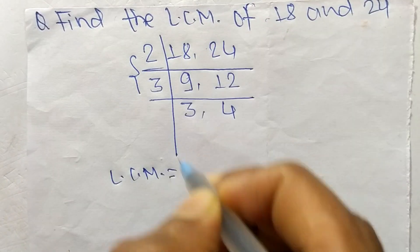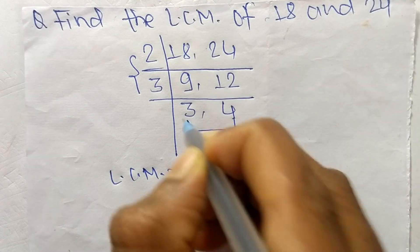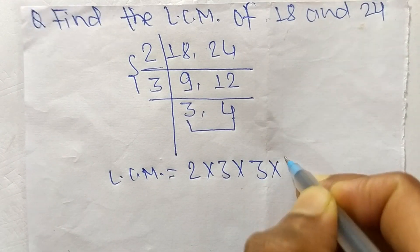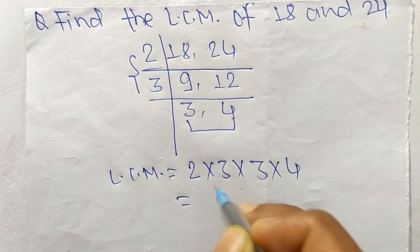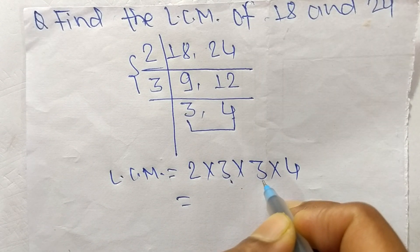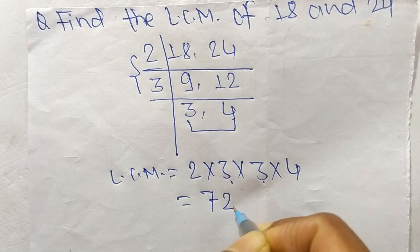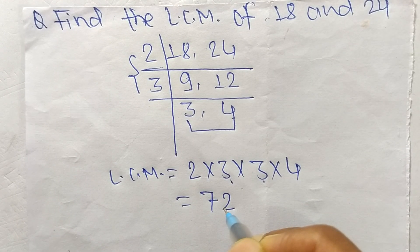2 times 3 means 6, 6 times 3 means 18, 18 times 4 means it is 72. So 72 is the LCM of 18 and 24.